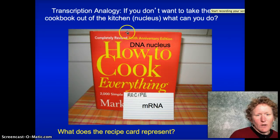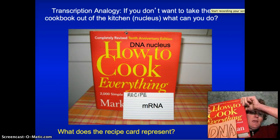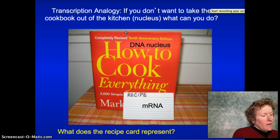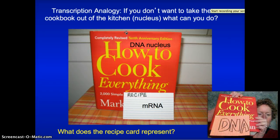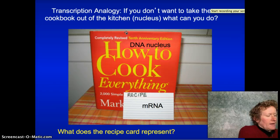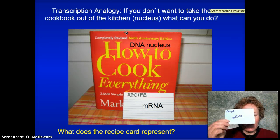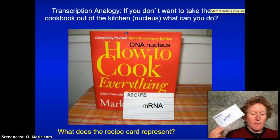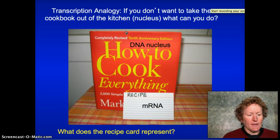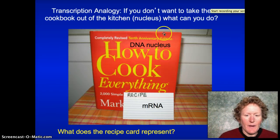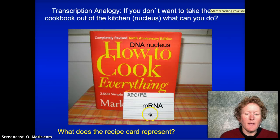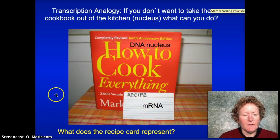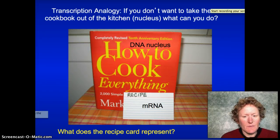If you want a recipe and you want to take it out of the kitchen to go grocery shopping or to a friend's house to make that particular recipe, you copy it out of your giant book. Most people copy their recipes onto a little recipe card — much more portable, much more useful. You can make a whole bunch of copies and give them to friends. And that's exactly what your body does: you make mRNA from your DNA in the nucleus, and this mRNA travels outside the nucleus to the machinery of the cell that makes proteins.